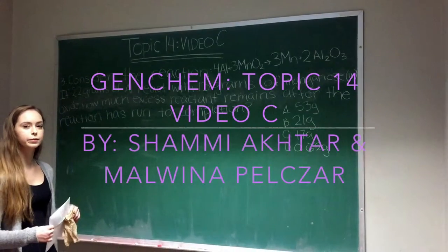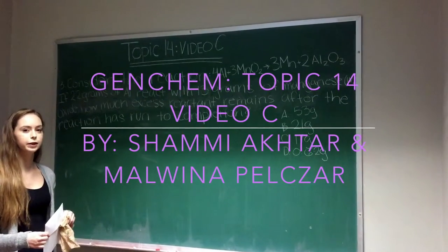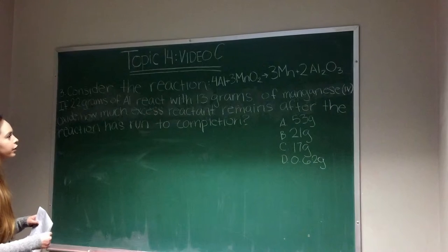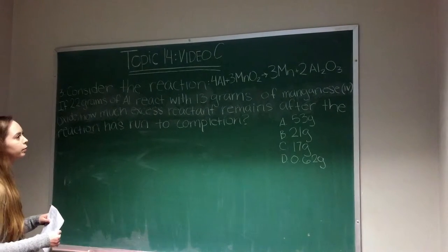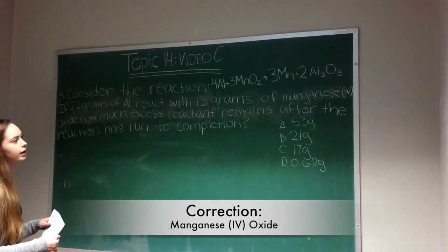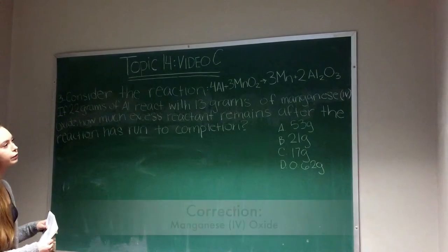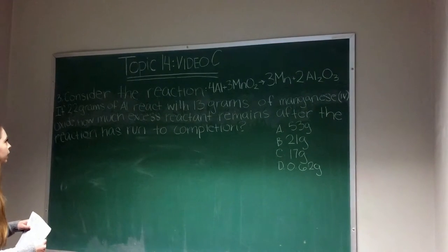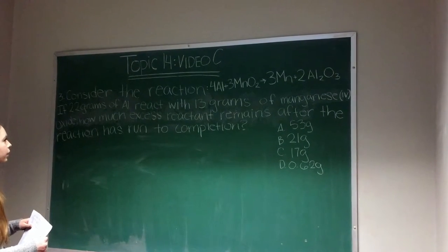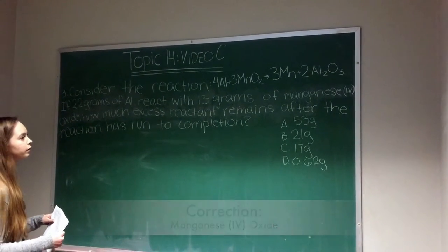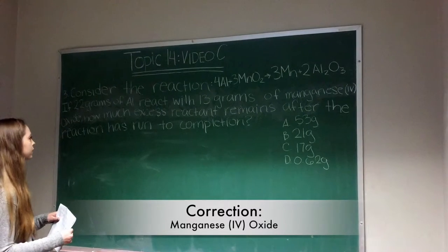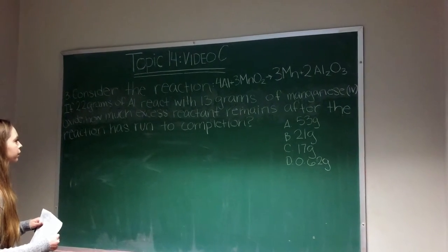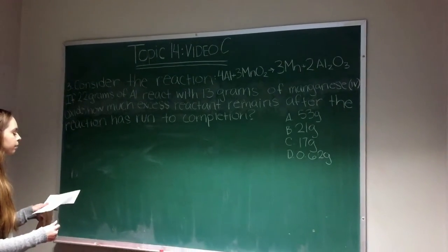We're going to do question 3 from topic 14, video C. The question is: consider the reaction 4 aluminum + 3 manganese oxide yields 3 manganese + 2 aluminum oxide. If 22 grams of aluminum react with 13 grams of manganese oxide, how much excess reactant remains after the reaction has run to completion?